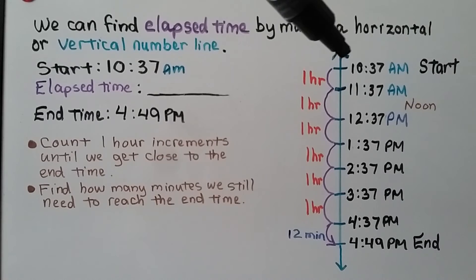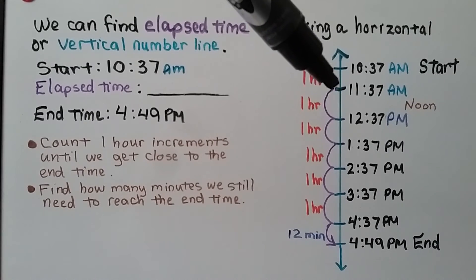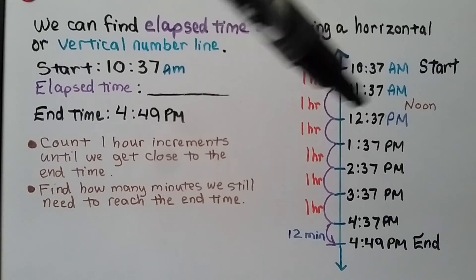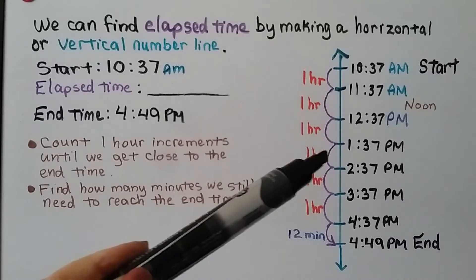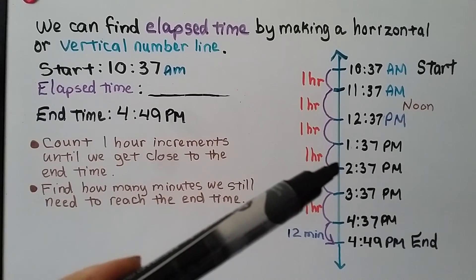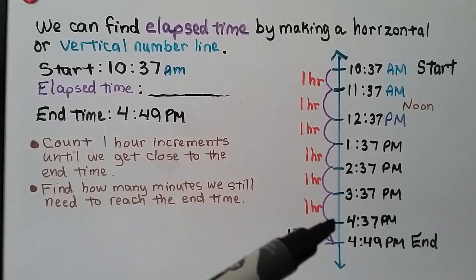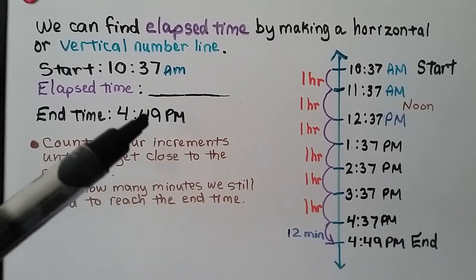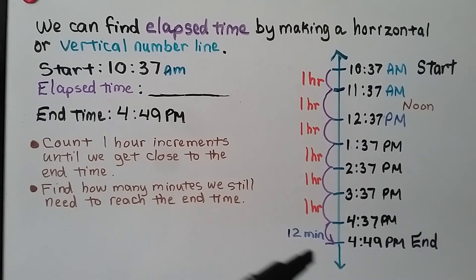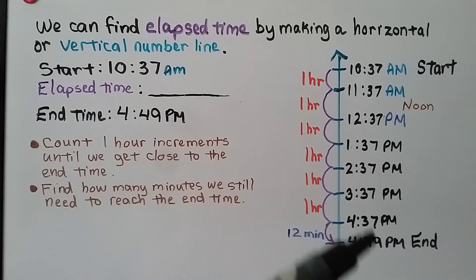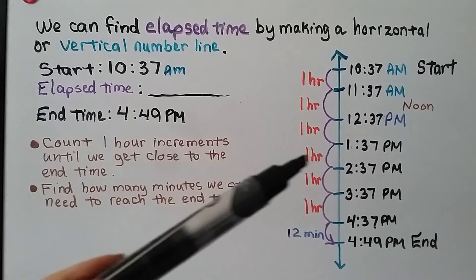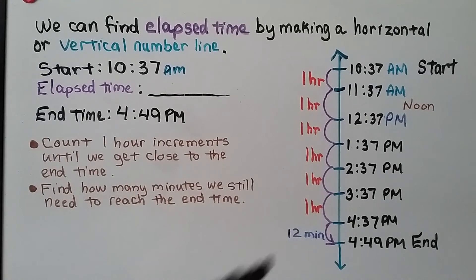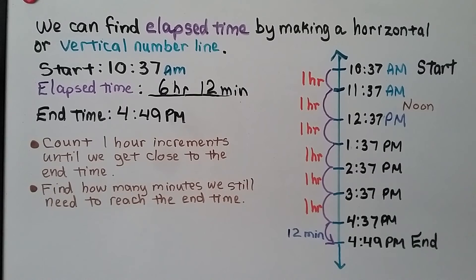We start at 10:37 AM. We go one hour, we're at 11:37 AM. When we go one more hour, we're going past noon and the clock is going to change to PM. We go one more to 1:37 PM, 2:37 PM, 3:37 PM, 4:37 PM. We're getting close to 4:49 PM. We can either use subtraction to find the difference between these two or we can count on to find that it's a 12 minute difference. That means we've got one, two, three, four, five, six hours and 12 minutes as our elapsed time.